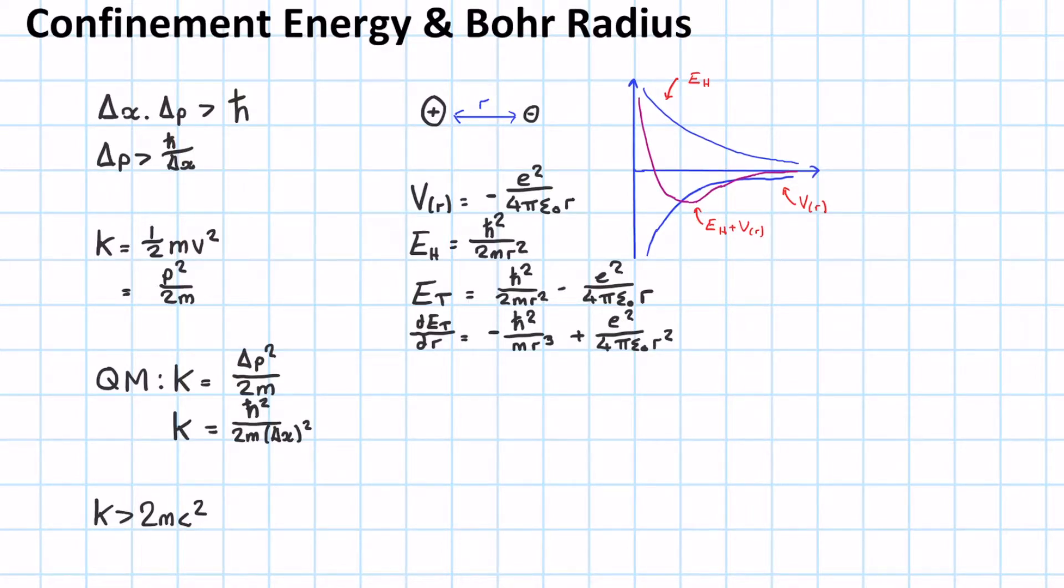Now, what we're interested in here is the stationary value of this graph. And that is tantamount to saying when the gradient of this graph is equal to 0. So, we want to know when DET by DR is equal to 0. So, let's set that equal to 0 now.